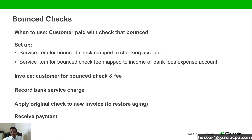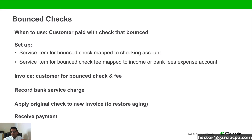First thing is we have to create a service item for the actual bounce check itself, and we're going to match that to the bank account — we're going to create an item that matches the transaction that's going to be actually withdrawn from your bank account. Then we're going to create an item for the actual fee, because in most cases when there's a bounce check, we tend to charge our customers the fee that we get charged from the bank. That item can be mapped either to income, assuming that we charge over what our bank actually charges us, or we can map it to the bank fees expense account if we're just getting reimbursed for that fee.